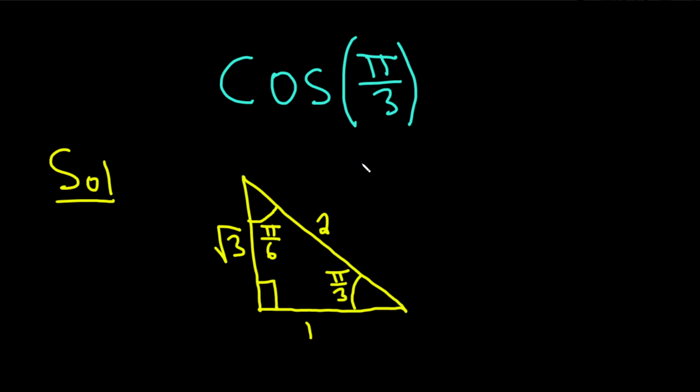And this triangle together with SOHCAHTOA will allow us to compute the cosine of pi over 3 very easily.